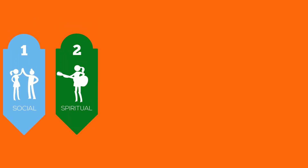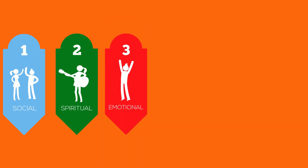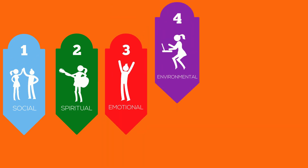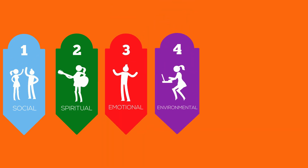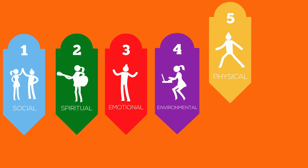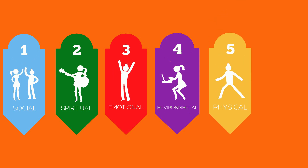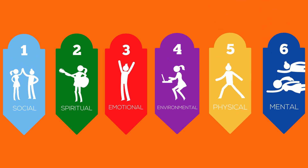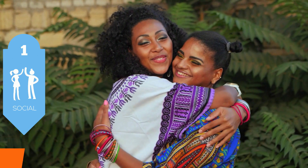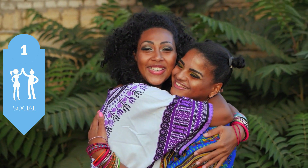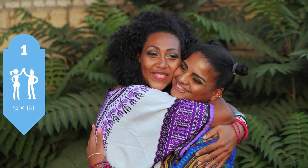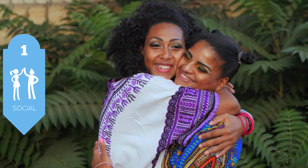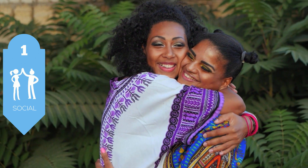Wellness can be used to help our social and spiritual lives, along with our emotional and environmental well-being. And it can be applied to physical and mental health. Let's take a look at the first category: social wellness, and how wellness can be applied in this area of our lives.